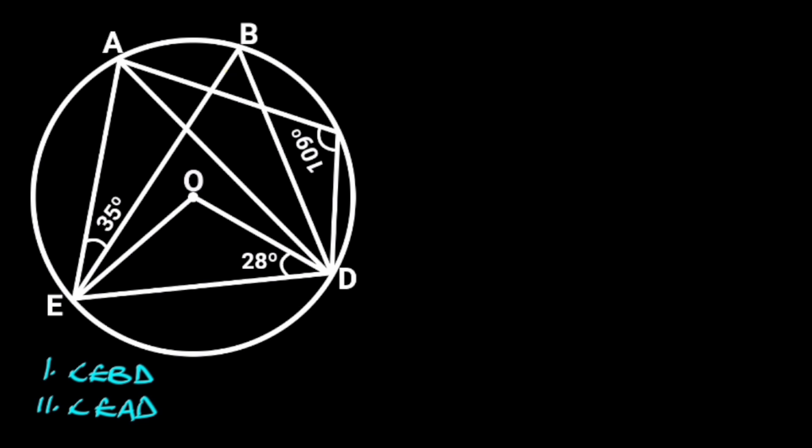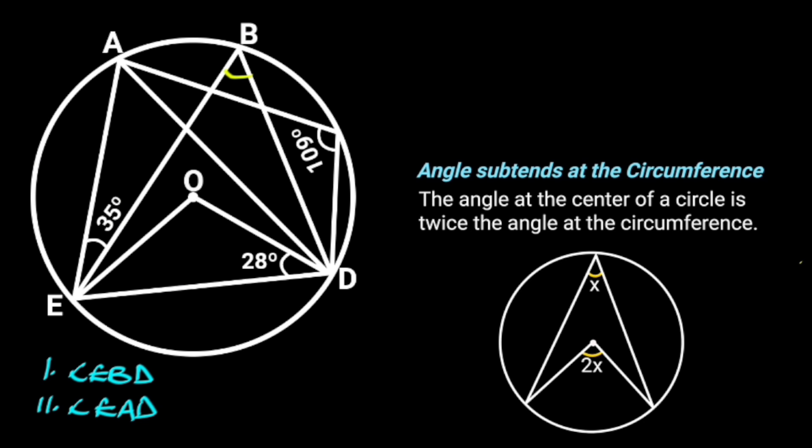Let's go ahead and solve. Angle EBD is an angle subtended at the circumference. Let's recall the circle theorem of angle subtended at the circumference: the angle at the center of a circle is twice the angle at the circumference.